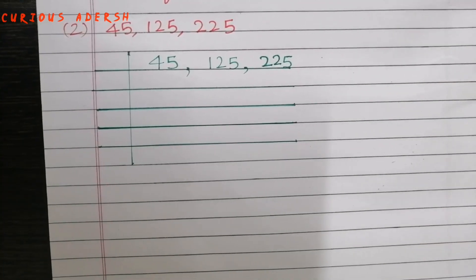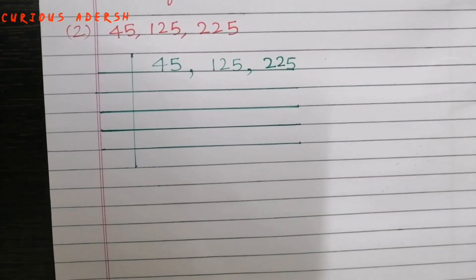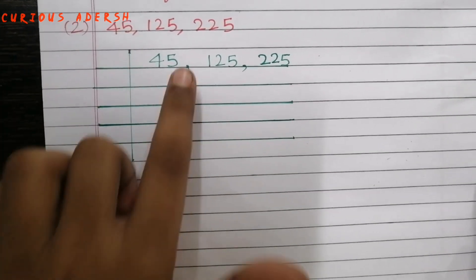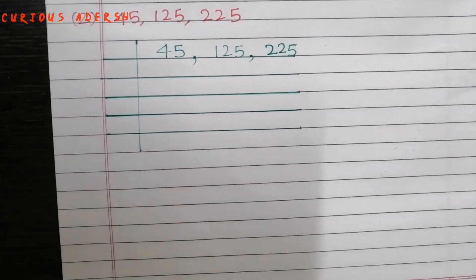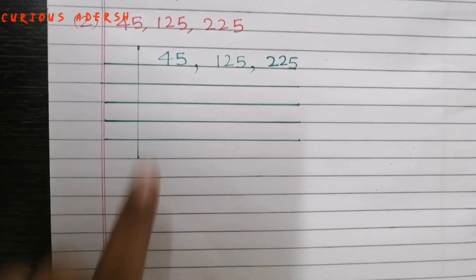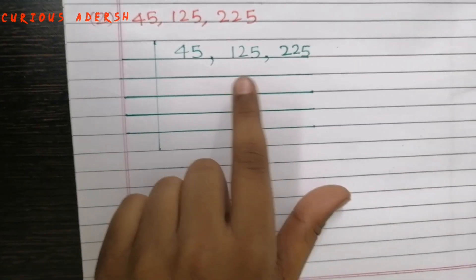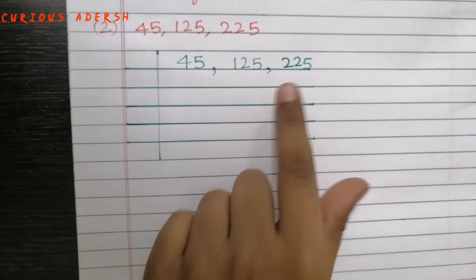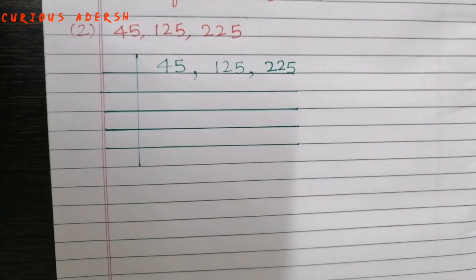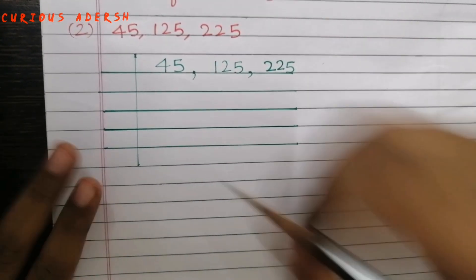Now let's find LCM by division method for 45, 125, and 225. 45, 125, and 225 are divisible by 5.